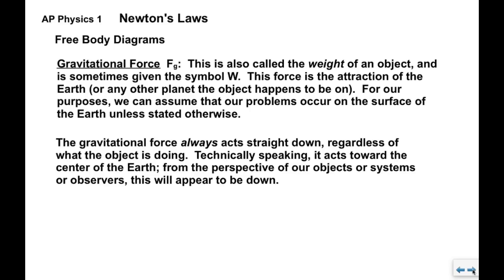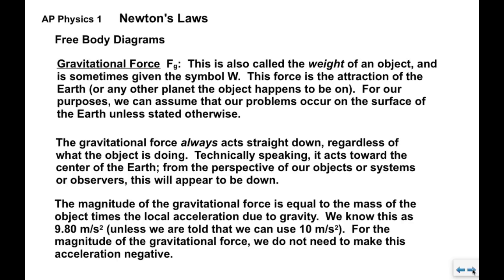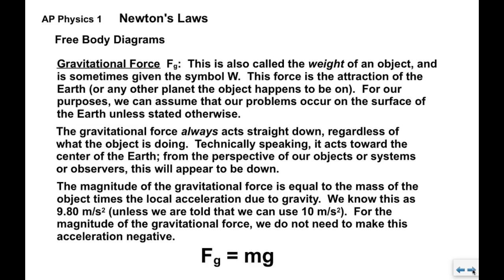So this gravitational force will always act straight down regardless of what the object is actually doing. If we want to be really honest about it, we would say that the force acts towards the center of the Earth. From the perspective of the objects or systems that we look at, this will appear to point straight down. Now the magnitude of the gravitational force, or the weight, is equal to the mass of the object times the local acceleration due to gravity. We know this is 9.8 meters per second squared, unless we're told that we can use 10. For the magnitude of the gravitational force, we do not need to make this acceleration negative, and you'll see why in the next section. So in short, FG equals M times G. Easy enough.